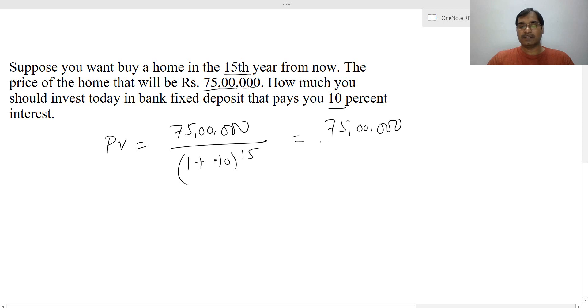So this is 75 lakhs divided by 4.1772, which equals to 17 lakhs 95,461 rupees. So if you deposit rupees 17 lakhs 95,461 today in a bank deposit, then that will fetch you 75 lakhs in 15 years.